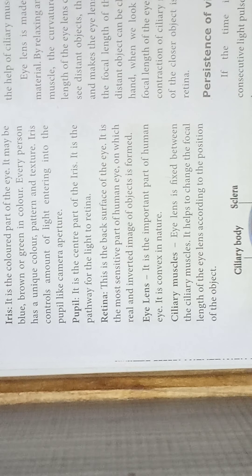The eye lens is an important part of the human eye. It is convex in nature. The eye lens is fixed between the ciliary muscles. It helps to change the focal length of the eye. The eye lens adjusts its focal length according to the position of the object.